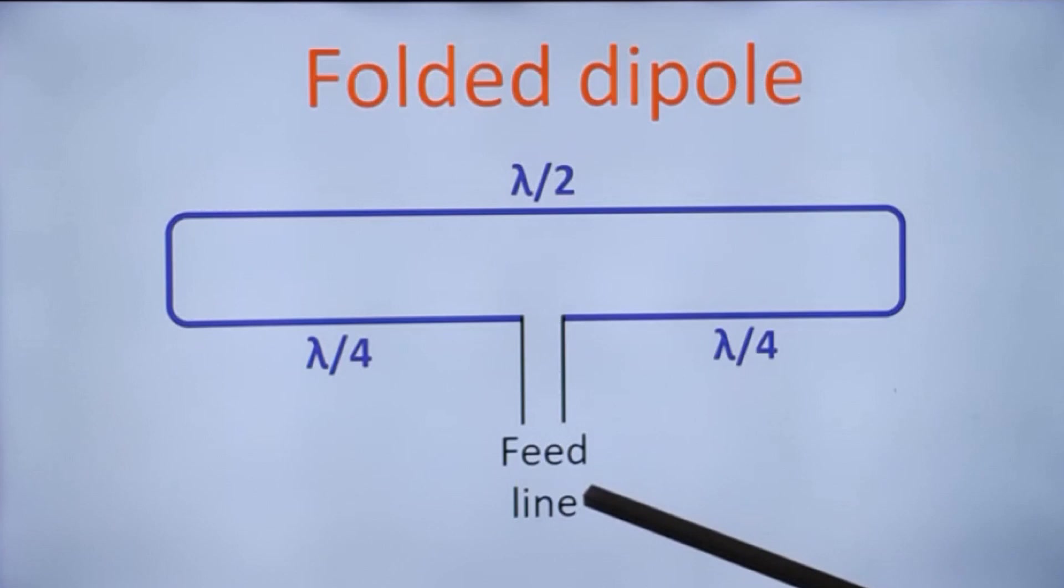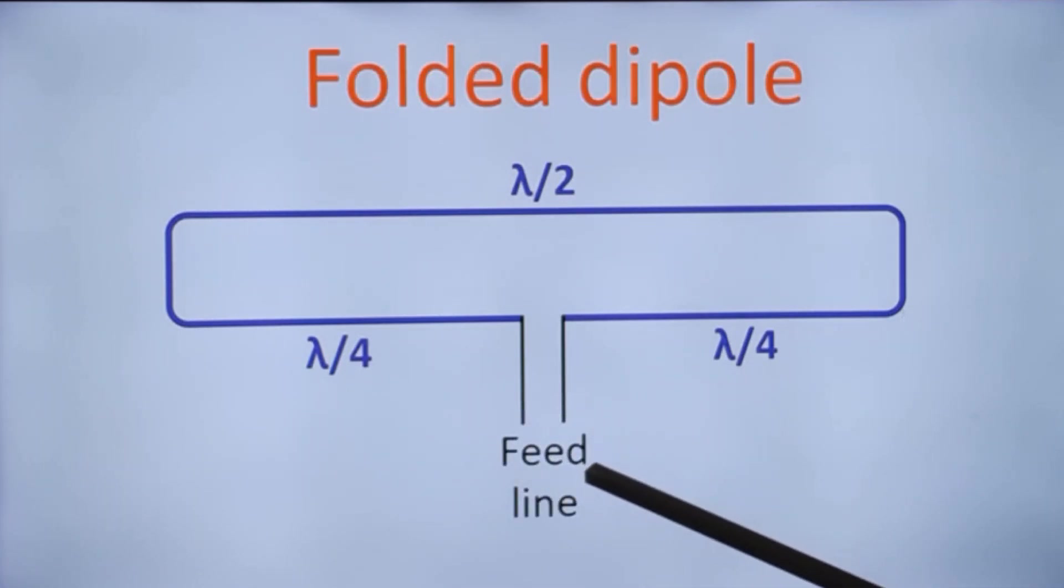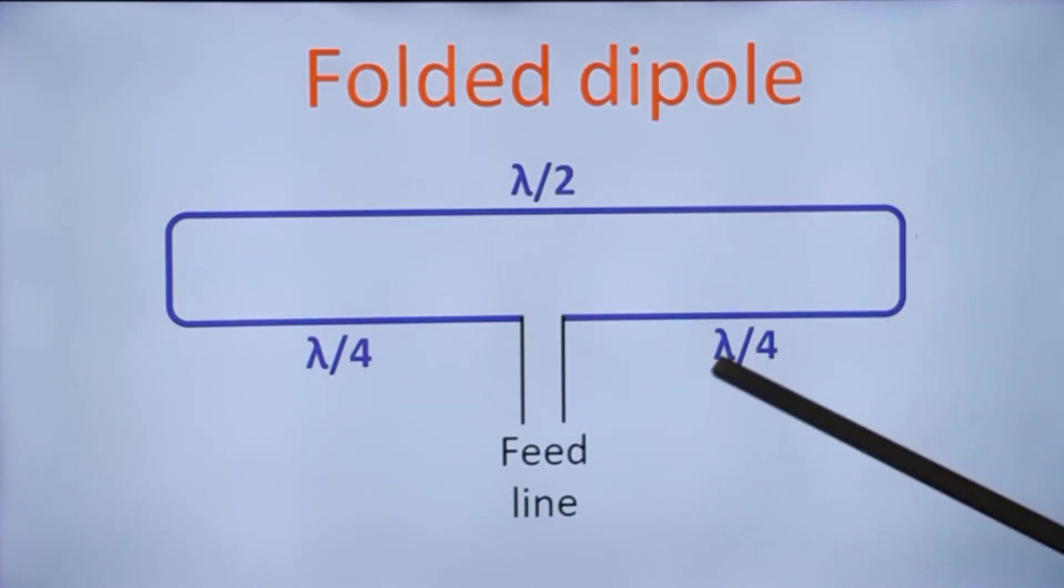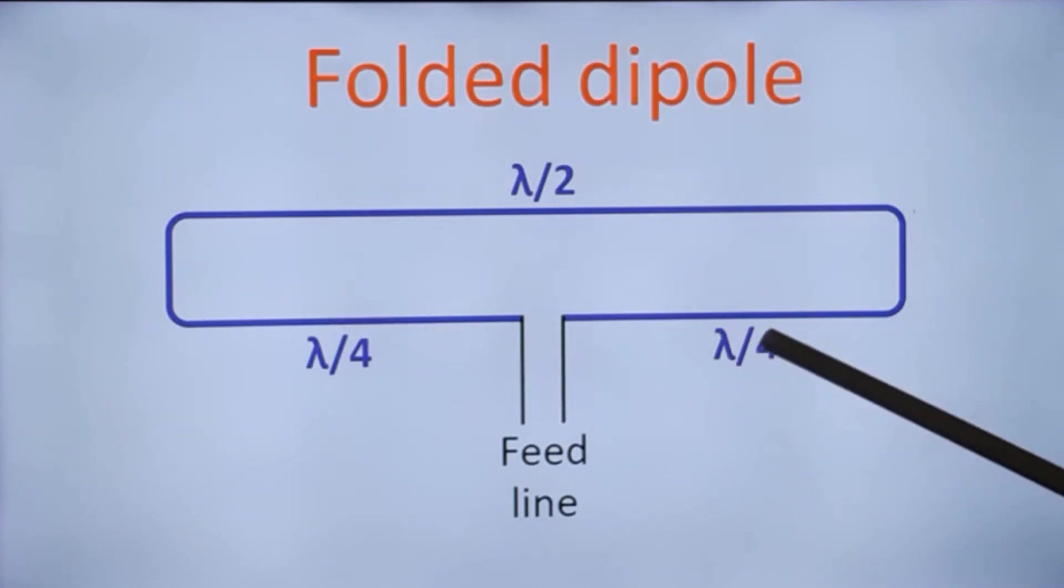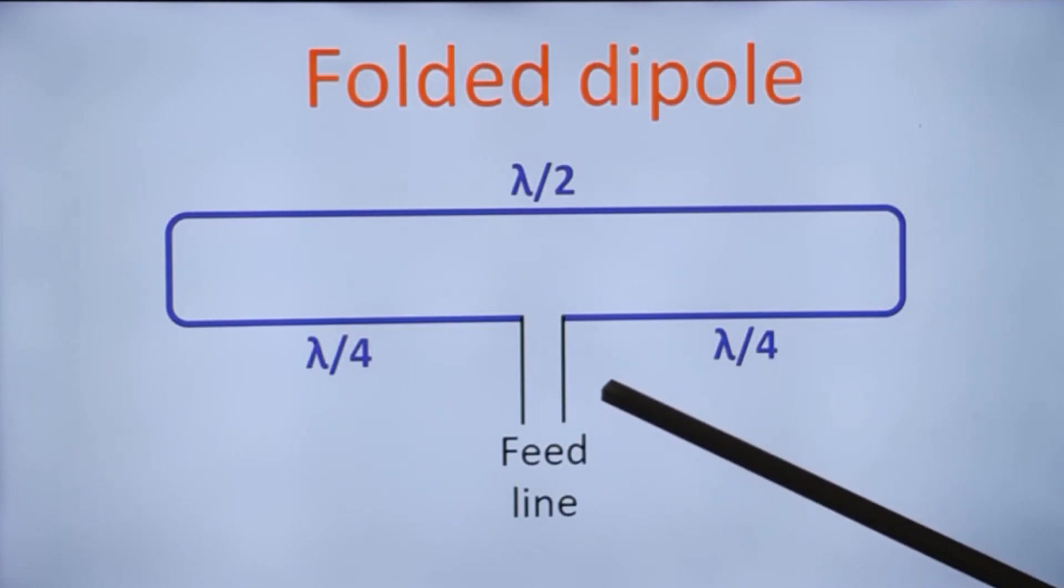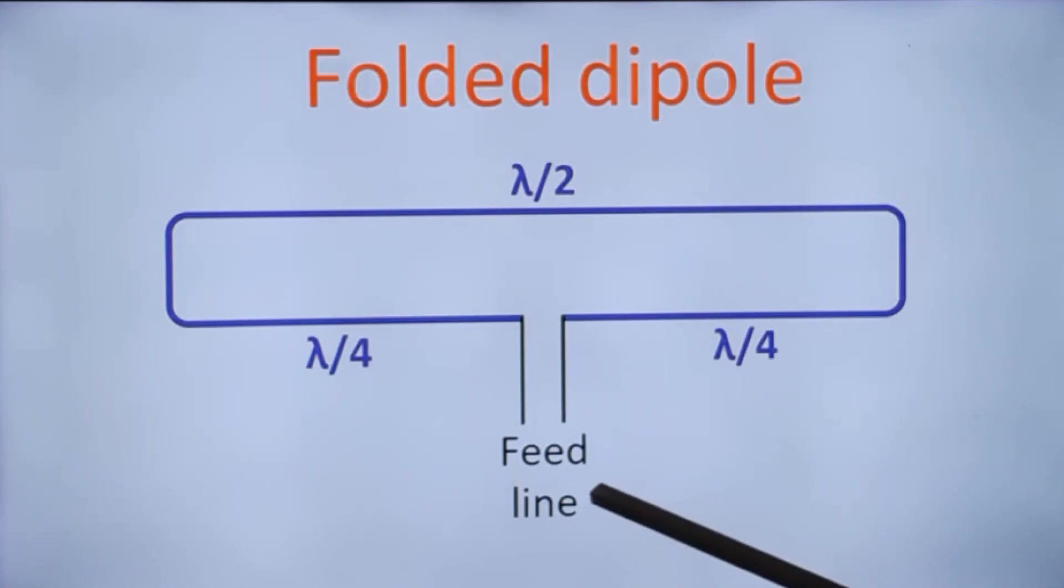In those days, the feed line used to be a ribbon tape for TV having an impedance of about 300 ohms. The usual dipole without this additional loop will have an impedance of around 70 ohms. So folded dipole would use a feed line which is parallel line, a ribbon tape, while simple dipole TV cable used to be of about 70 ohms impedance.